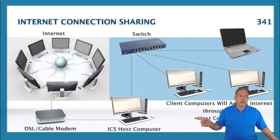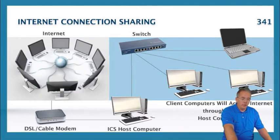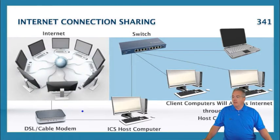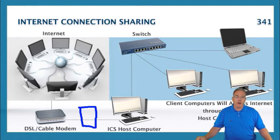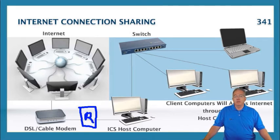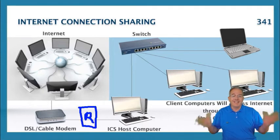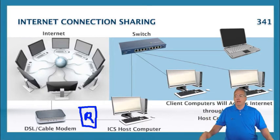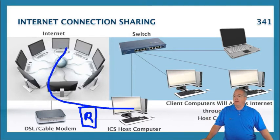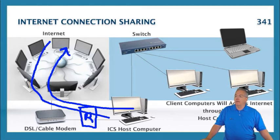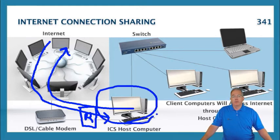You never want to plug any of your machines directly into the DSL or cable modem. Instead, what you're going to want to do is put a little router box right here. A lot of times this router box is also your wireless access point. This little router box is going to refuse any connections that are not established. If you request a web page, the packets coming back are flagged as established, allowed through the router, and then they can go to your particular machine.